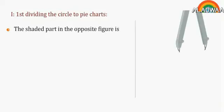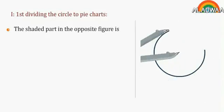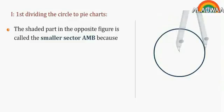First, dividing the circle into pie charts. The shaded part in the opposite figure is called the smaller sector AMB.